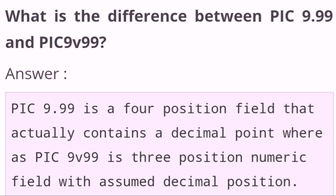What is the difference between PIC 9.99 and PIC 9V99? PIC 9.99 is a four-position field that actually contains a decimal point, whereas PIC 9V99 is a three-position numeric field with an assumed decimal position.